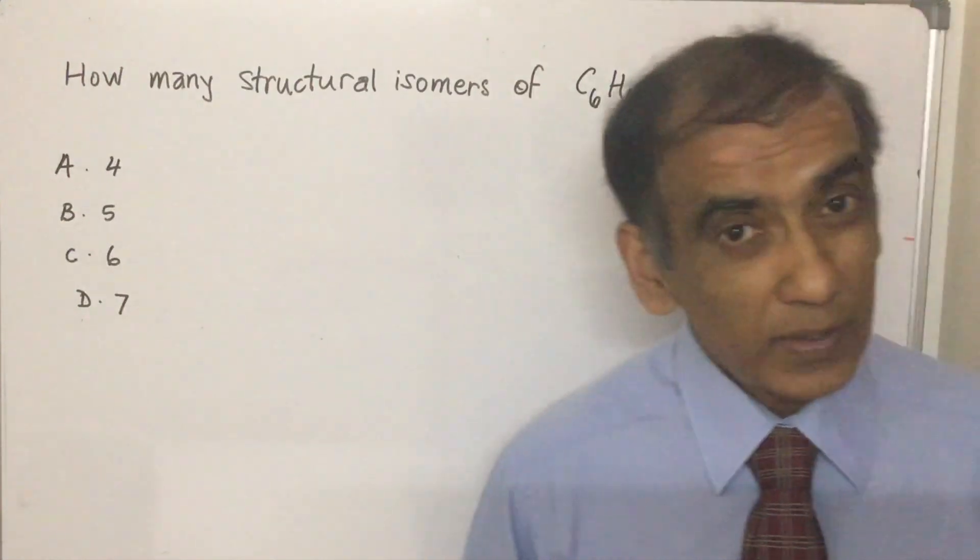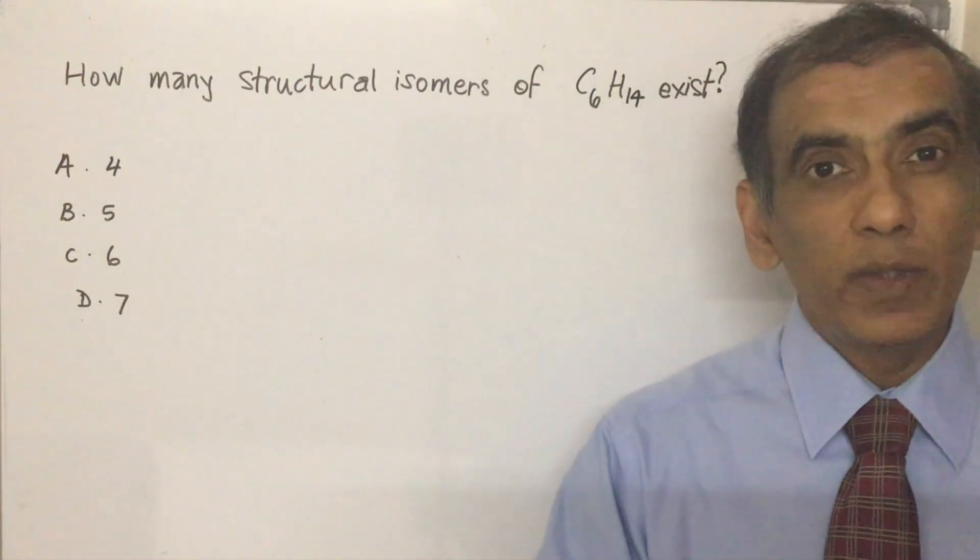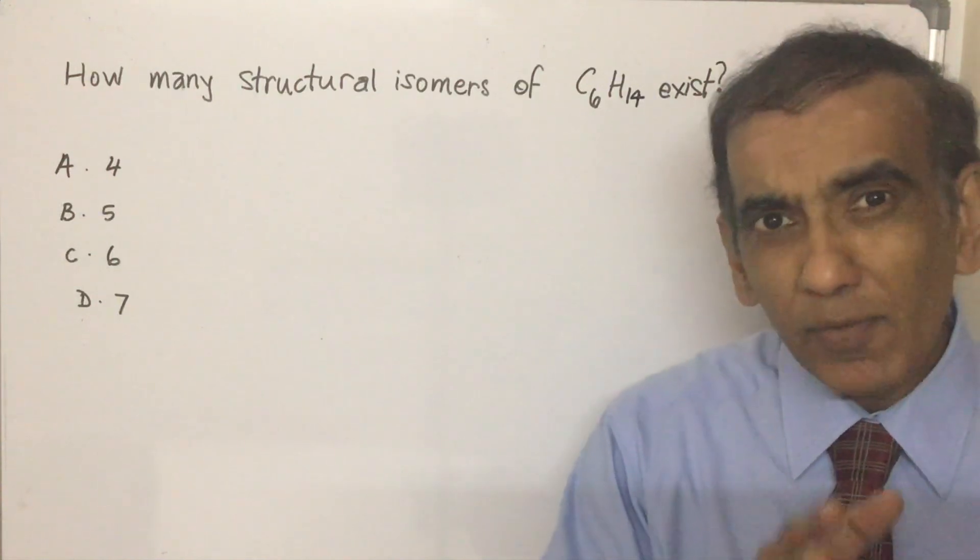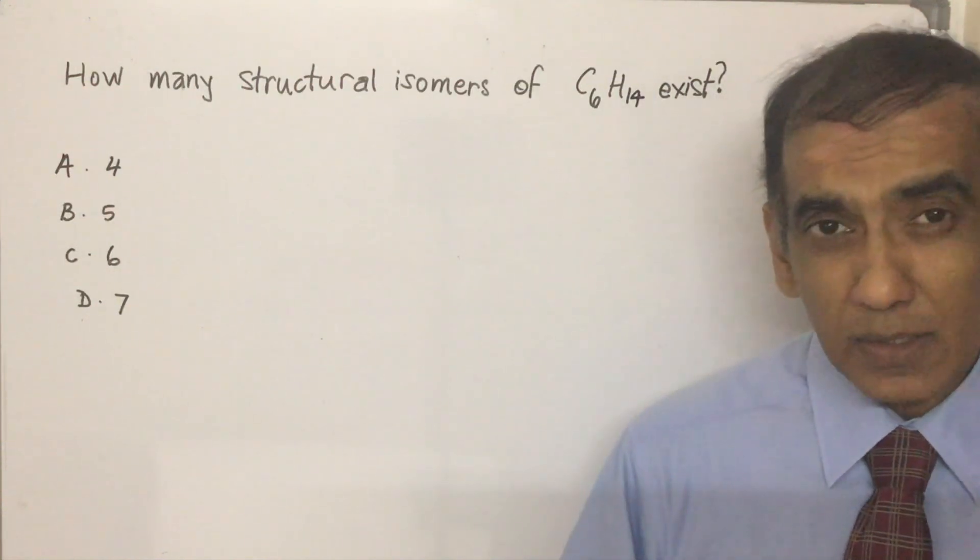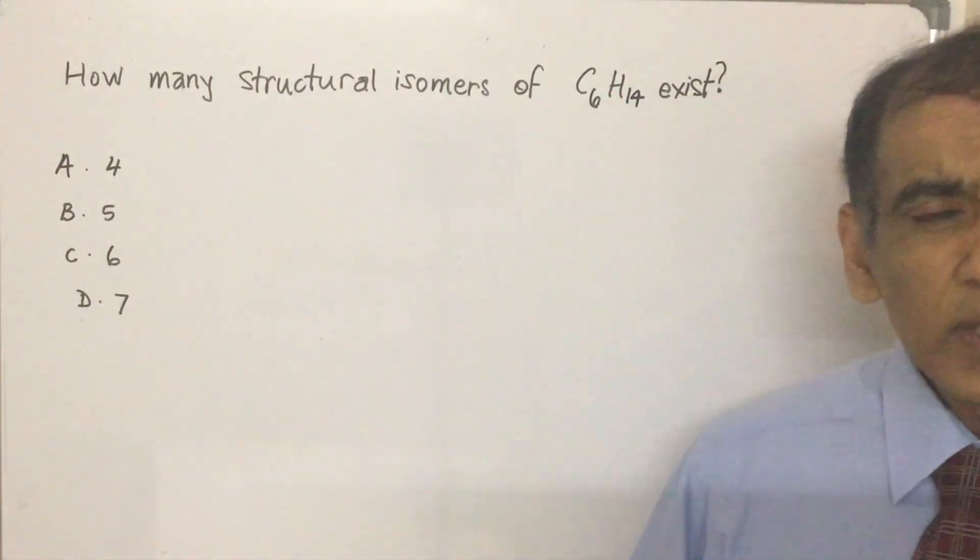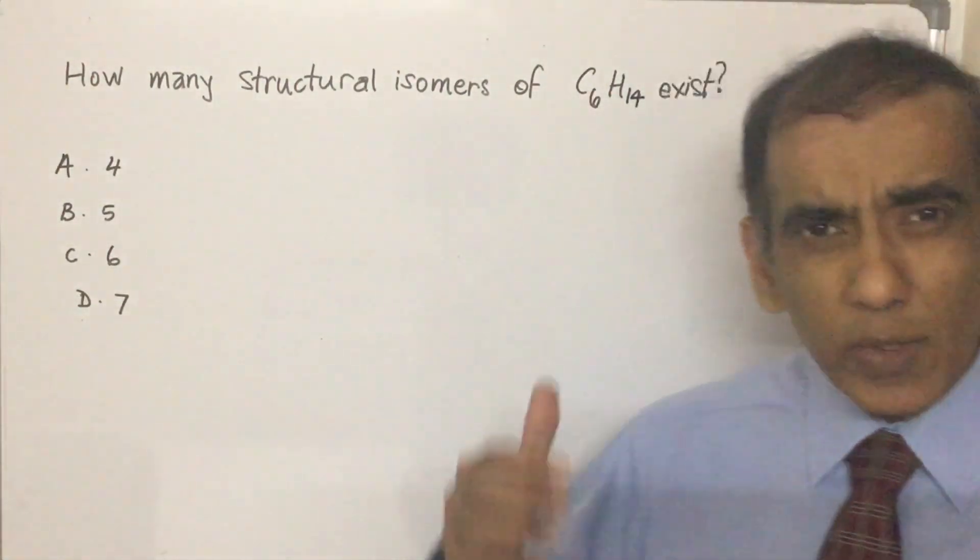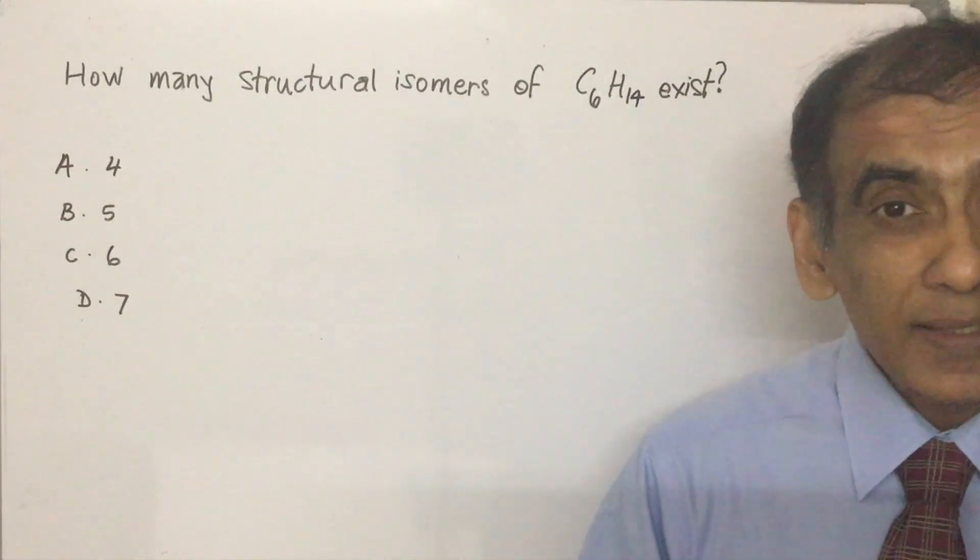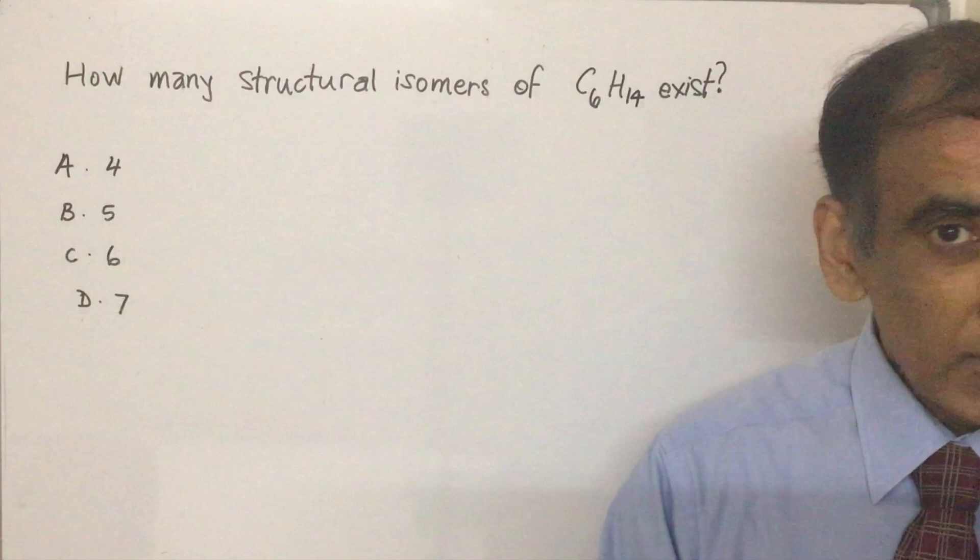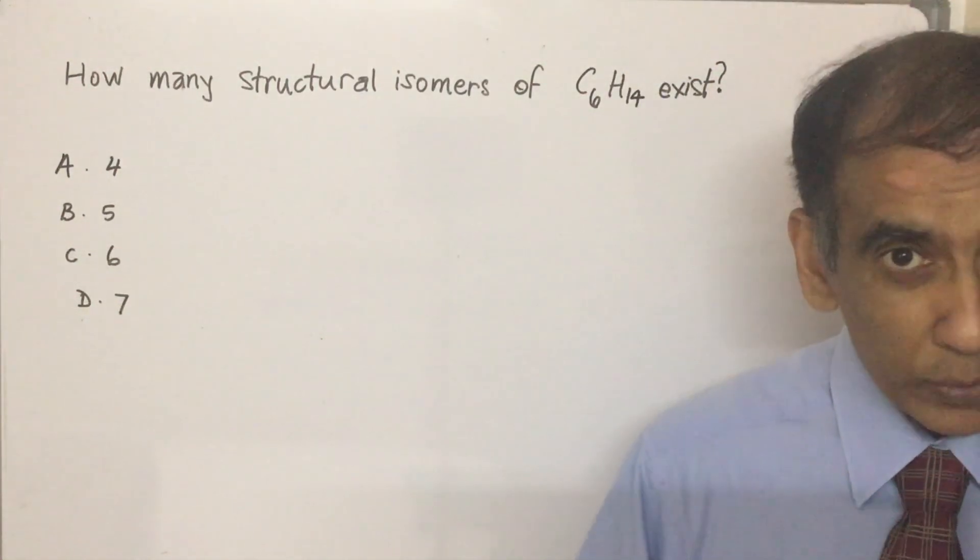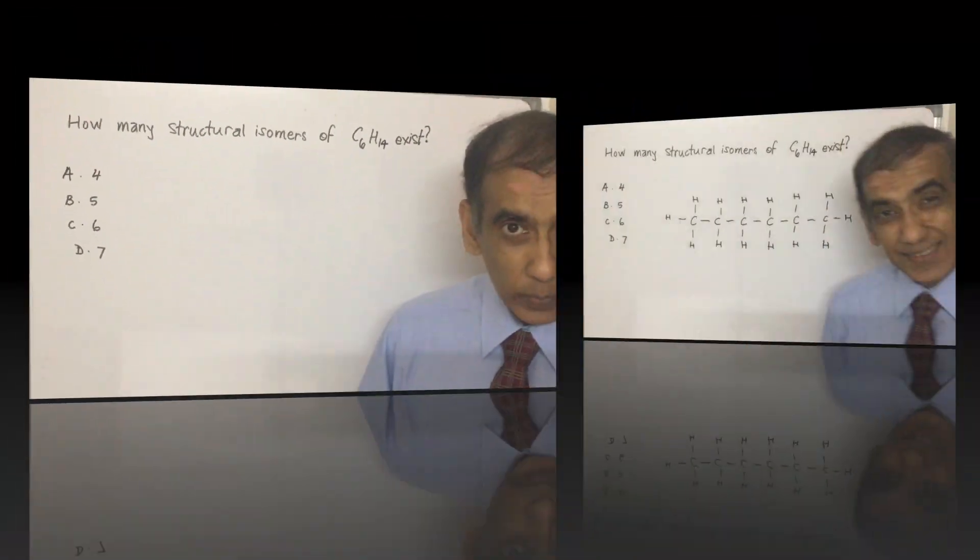So that comes to the average of 90 seconds per question. Of course, the good thing is some of those questions will be finished in 10, 15 seconds, allowing you to have about two and a half to three minutes to do some of the more difficult questions. But the question does arise, how is a student supposed to go about solving this in the IB exam? Well, the first way of course is to look at the structure and draw all the structural isomers.